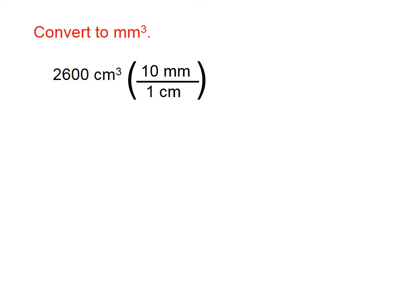But the problem is that centimeters cubed is actually centimeters times centimeters times centimeters. That means this unit of centimeters in the denominator will only cancel one of those, and there are two more that haven't been canceled yet. So we need this conversion factor three times. You can either write it out two more times or cube it.